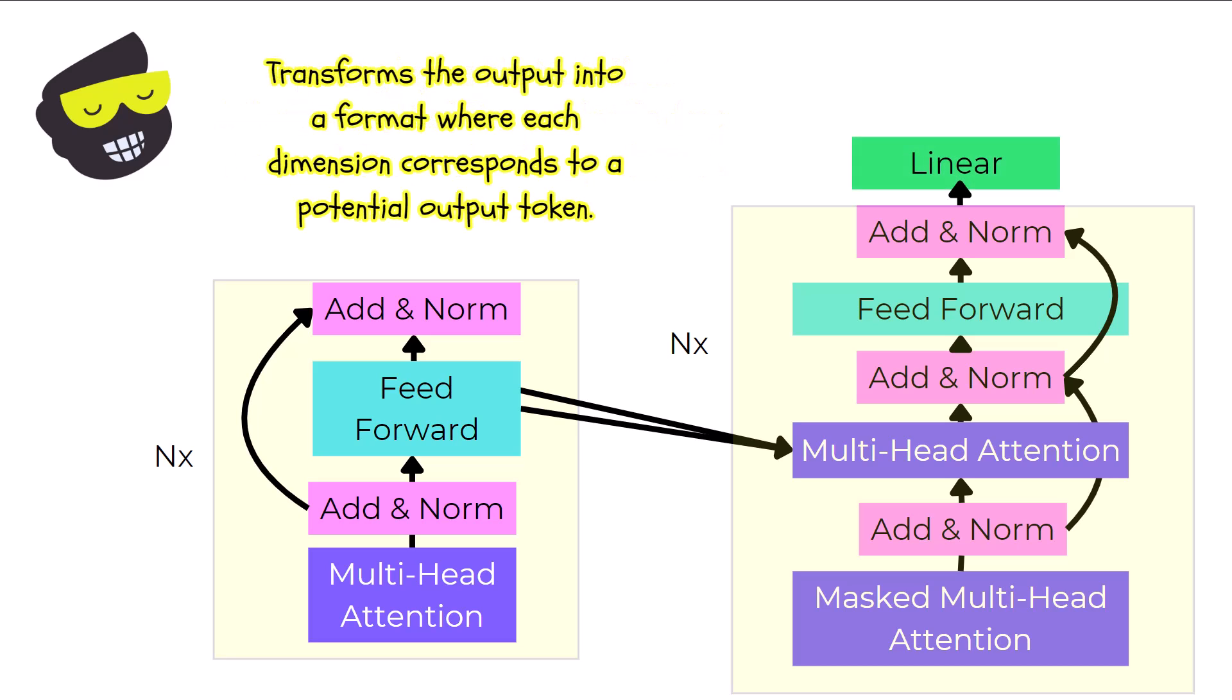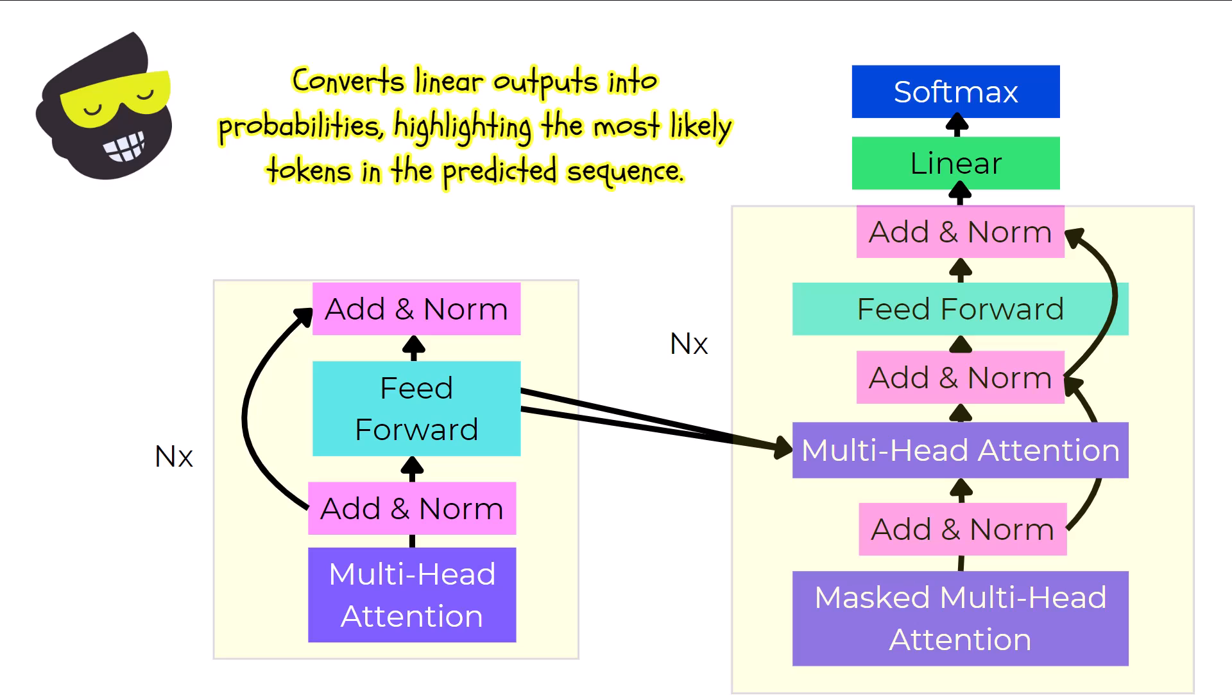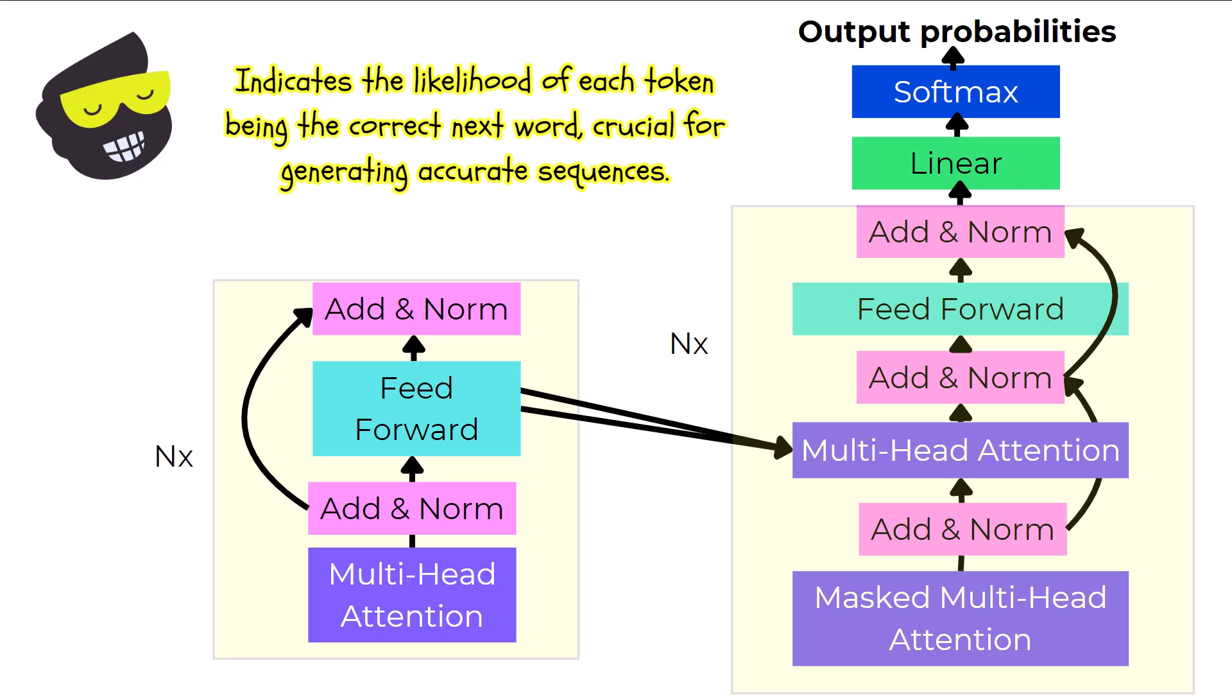The linear layer is the final transformation step before generating predictions. It takes the output from the feed forward layer and projects it into the space of the target vocabulary. Essentially, this layer translates the complex high dimensional data into a format where each dimension corresponds to a potential output token. And then, after the linear layer, the data passes through a softmax function. This function converts the raw scores from the linear transformation into probabilities. It does this by exponentiating each score and then normalizing these values so that they can sum to 1. The final output from the transformer model is a set of output probabilities. These probabilities indicate the likelihood of each token being the correct next word in the sequence. By selecting the token with the highest probability, the model generates its predictions.